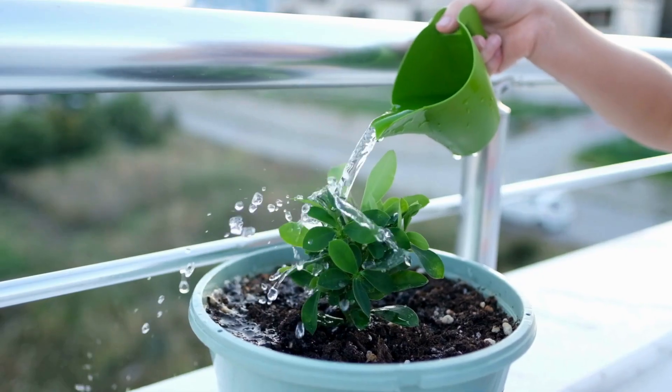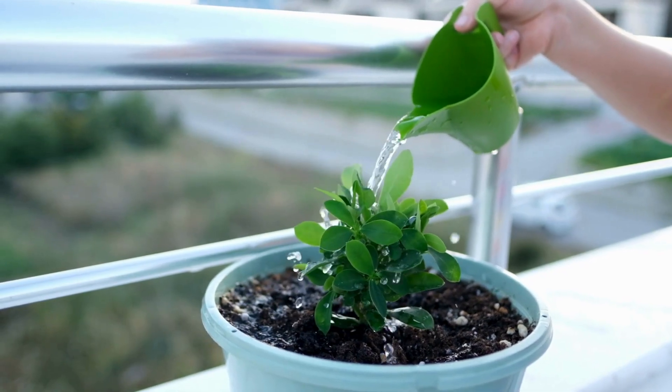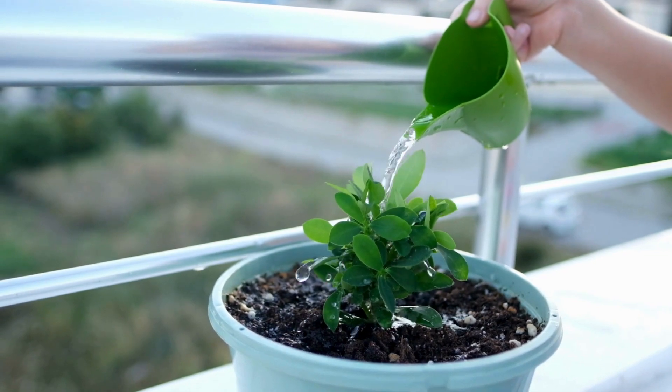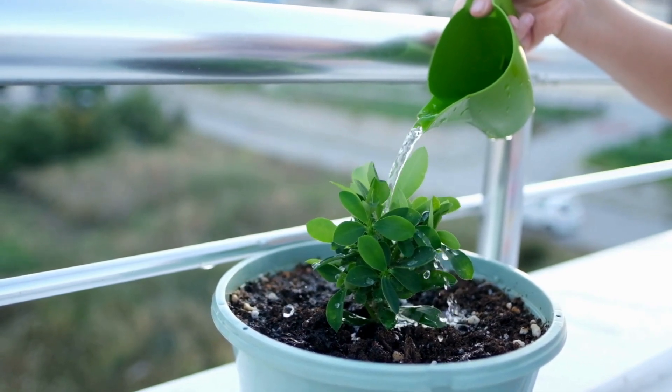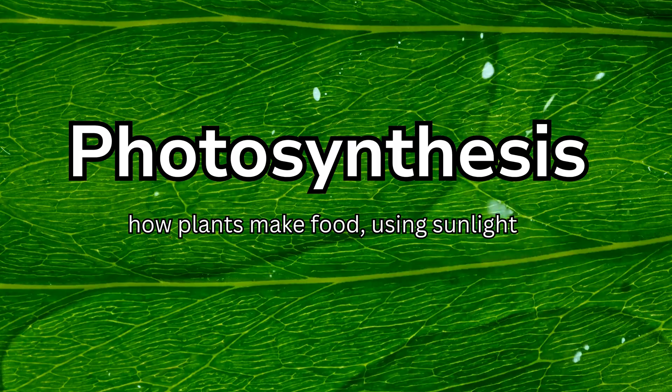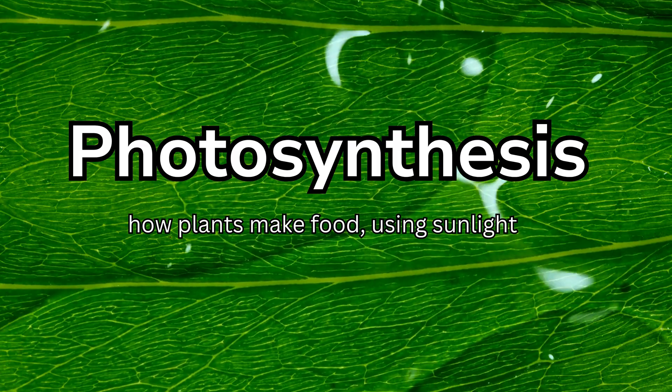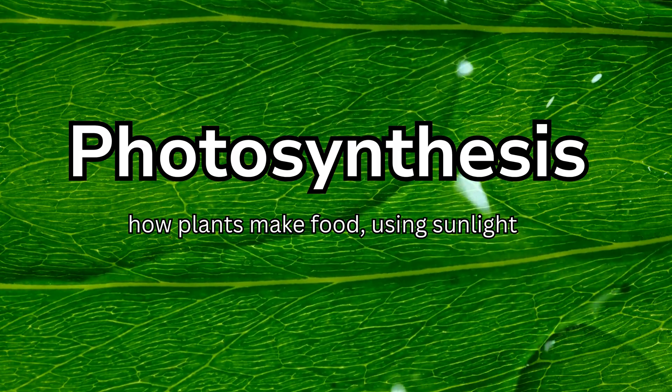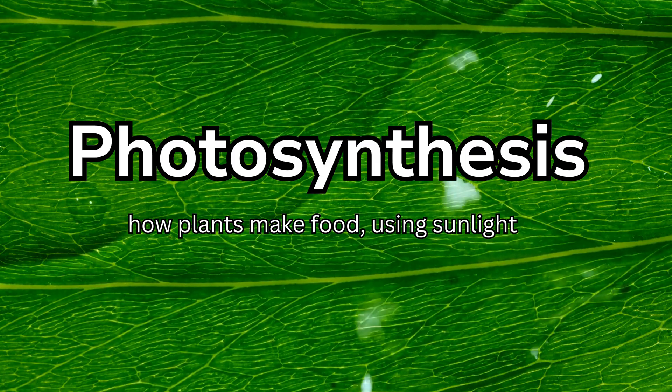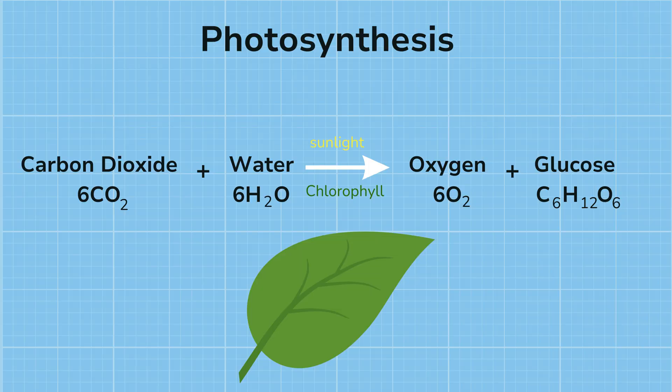Now van Helmont's conclusion was the tree got heavier by drinking water. Now that's not actually correct, but at least it was closer than we got before. It's actually all down to photosynthesis. This is the process by which plants make their food. In photosynthesis, a plant takes carbon dioxide and water and combines it to form a sugar, glucose, plus oxygen. This takes place inside chloroplasts where chlorophyll, the green pigment, captures the energy from sunlight.